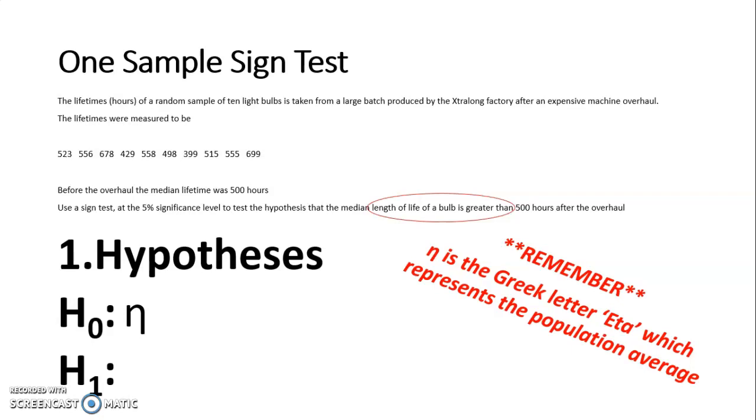In this question, we are looking at what happened before the overhaul. Before the overhaul, the median lifetime was 500 hours. So my null hypothesis is going to state that that value hasn't changed, and eta is still 500 hours. My alternative hypothesis needs to look at what we're being asked for in the question. Reading that final sentence, it wants to know if the median is greater than 500 hours. After they've had this overhaul, they want to see if the machine has improved the length of the life of the light bulbs. So we want it greater than 500 hours.